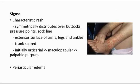For the signs of HSP, there is a characteristic rash which is symmetrically distributed over the buttocks and pressure points, over the extensor surfaces of the arms, legs, and ankles, sparing the trunk. It is initially urticarial, developing into a maculopapular rash and then into palpable purpura — as seen in this picture here. Sometimes patients might also have periarticular edema.